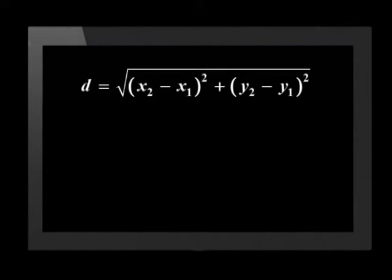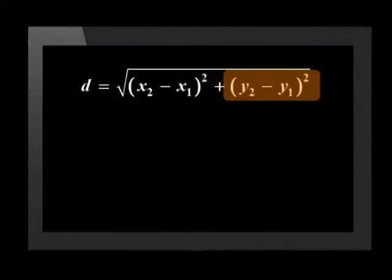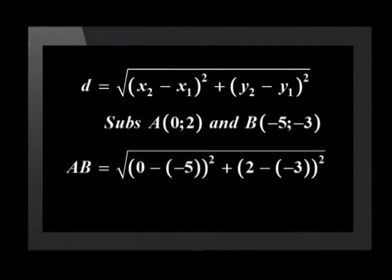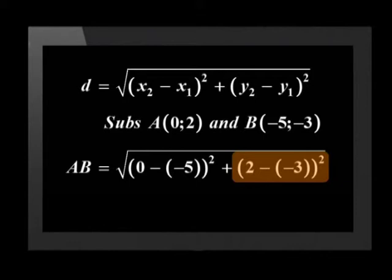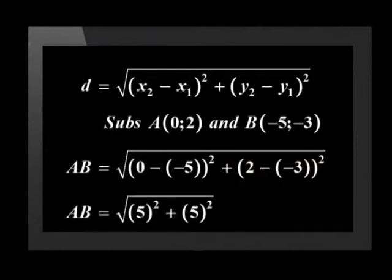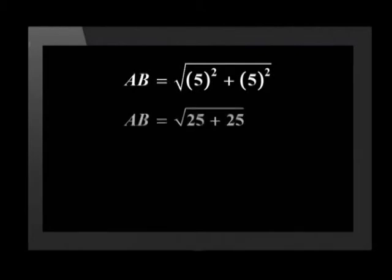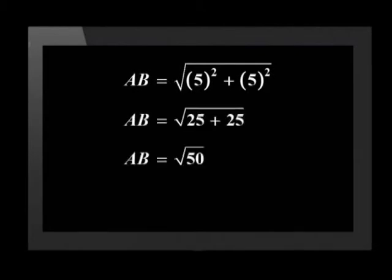The distance formula is: d equals the square root of (x₂ minus x₁) squared plus (y₂ minus y₁) squared. We substitute points A(0, 2) and B(-5, -3) into the formula. AB equals the square root of (0 minus negative 5) squared plus (2 minus negative 3) squared. Using BODMAS, both brackets equal 5. 5 squared is 25, and 25 plus 25 equals 50. We can simplify this to 5 times the square root of 2.